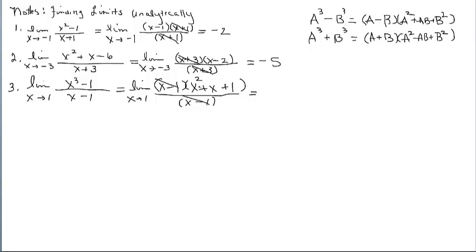Now we're ready to plug 1 in. 1 squared is 1, and 1 plus 1 plus 1 is 3. You can always graph this in your calculator — go to trace, plug in values close to 1 on either side, and your values are going to be close to 3. That's the y-value of the point discontinuity. This is the dividing out technique.